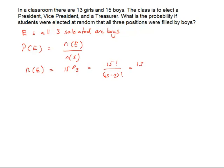So, simplifying, I have fifteen times fourteen times thirteen times twelve factorial, all over in the denominator twelve factorial. So, the twelve factorials cancel each other out, and we're left with fifteen times fourteen times thirteen.